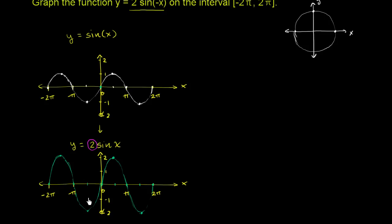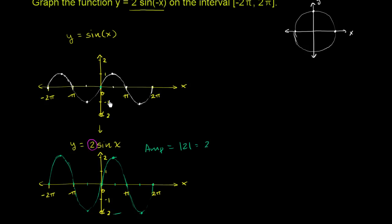The difference between the minimum and maximum values increased by a factor of 2. The total difference is now 4, and half of that is 2. So the amplitude is now 2 — the absolute value of that coefficient. It makes sense: the amplitude was 1, and now you're swaying from the middle position twice as far because you're multiplying by 2.